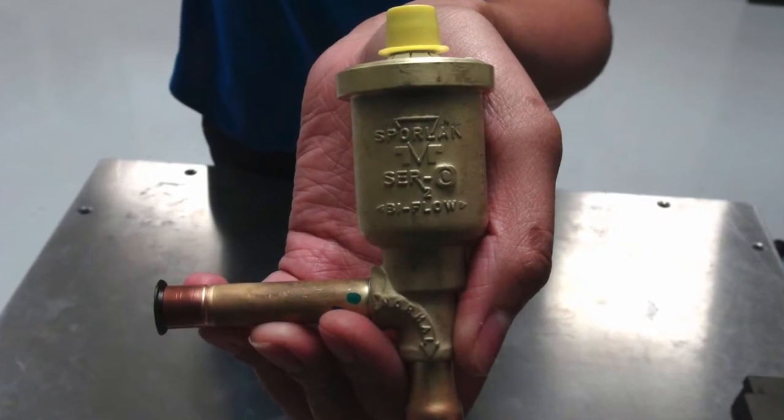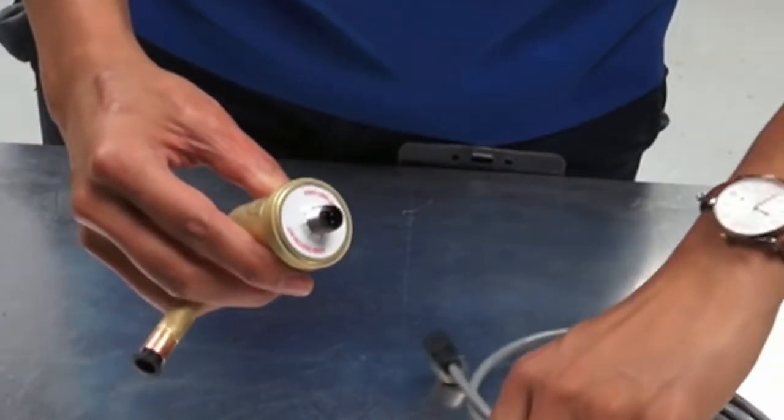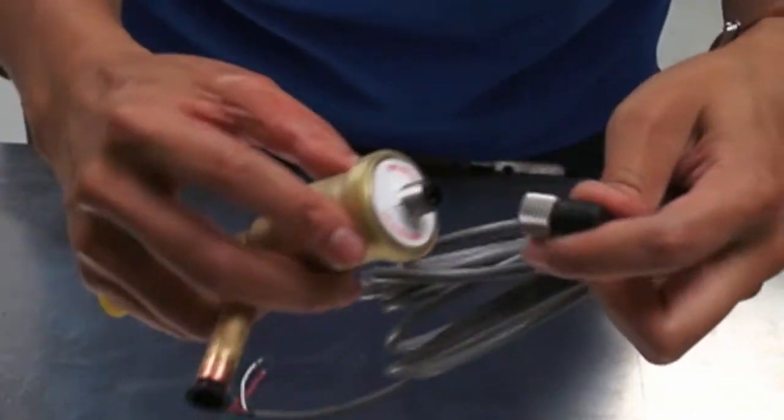Here's our electronic expansion valve that we're going to be attaching our cable to. First, take off the yellow cap and then we can attach the cable. Make sure that you're turning the nut rather than turning the cable itself.